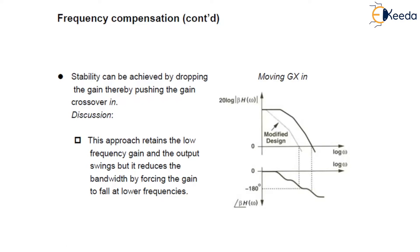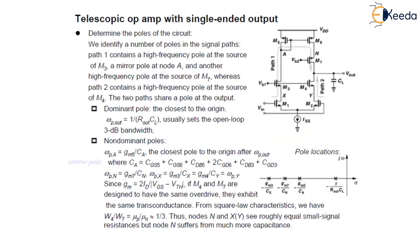We first try to design an op-amp to minimize the number of poles while meeting the gain requirement. We have applied this concept to the telescopic cascode op-amp, where the PMOS current mirror performs differential to single-ended conversion. We identify the poles in the signal path: path 1 contains a high-frequency pole at the source of M3, a mirror pole at node A, and another high-frequency pole at the source of M11.